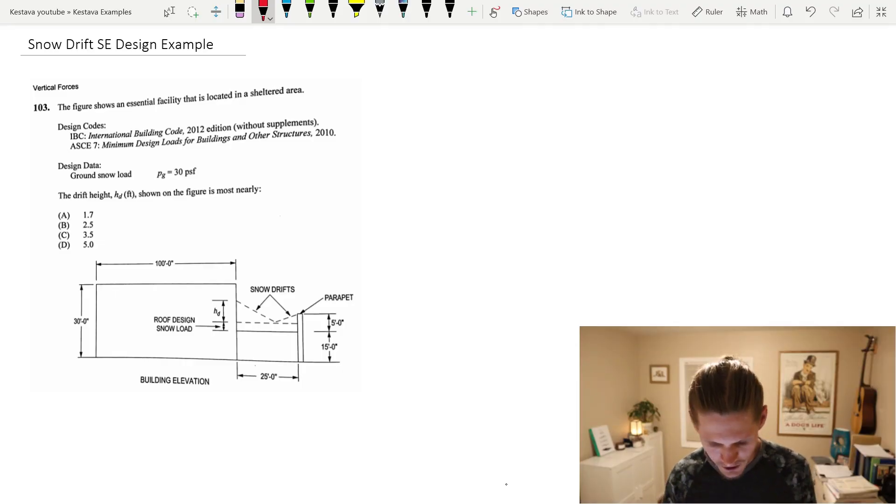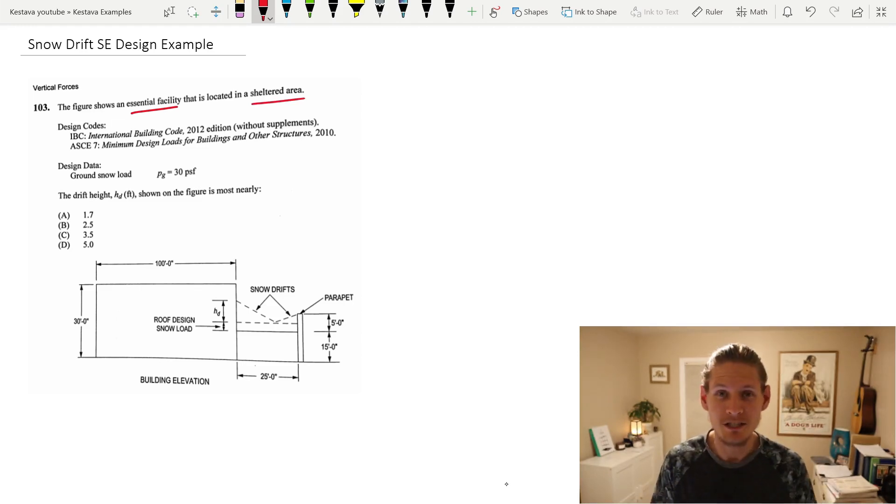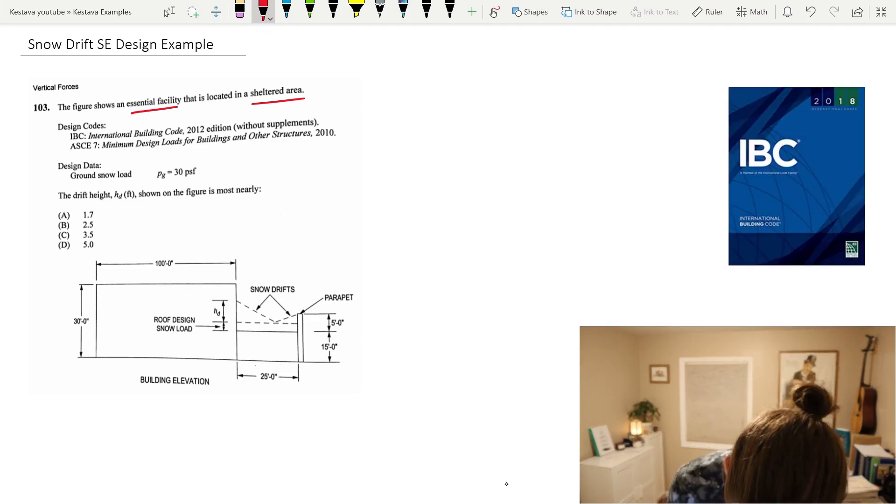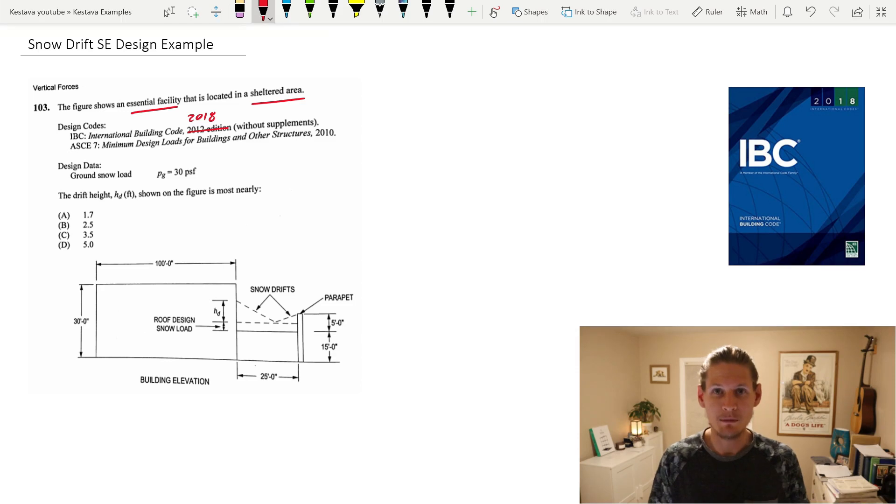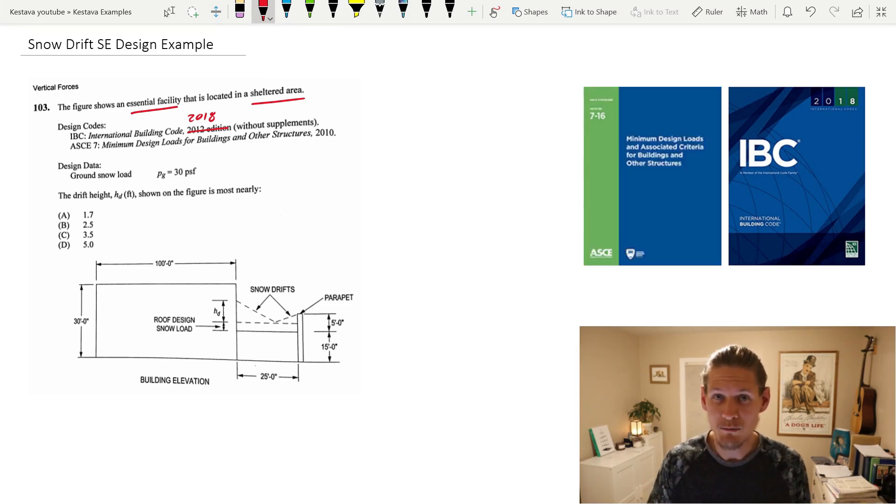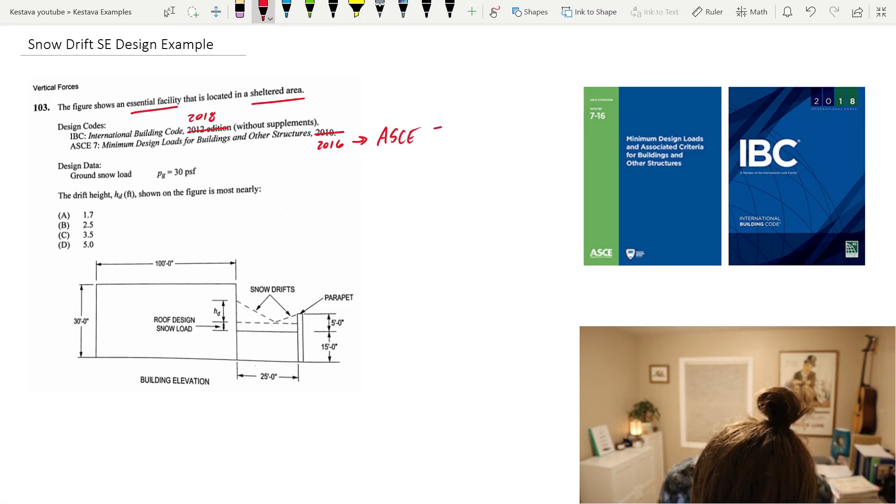Good old question 103. The figure shows an essential facility that is located in a sheltered area. Already two juicy bits of info: essential facility, sheltered area. The design codes that you would need to use if you were stationed here in the United States would be the IBC or the International Building Code. This is an outdated problem. So instead of the 2012 edition, we have the 2018 edition. And we'd also be using the complimentary ASCE 7-16 provisions or the minimum design loads for buildings and other structures.